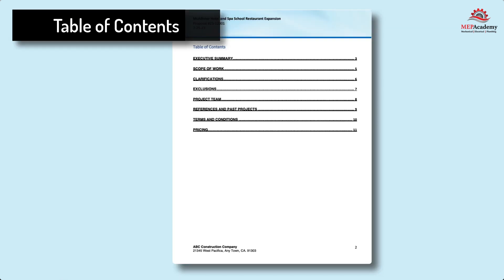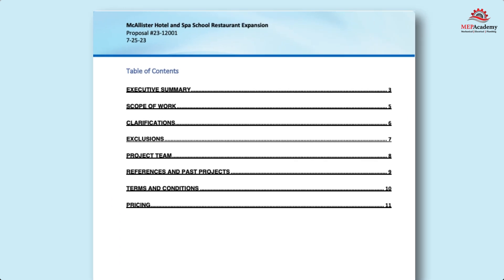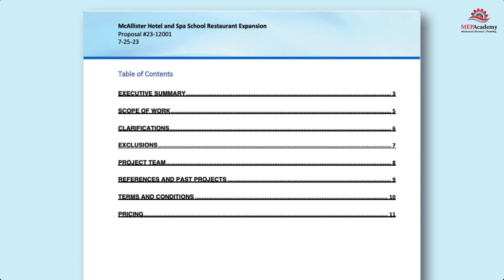The Table of Contents is a list of all the sections and subsections with their respective page numbers for easy navigation. Just click on any of these titles and it will jump to that section.